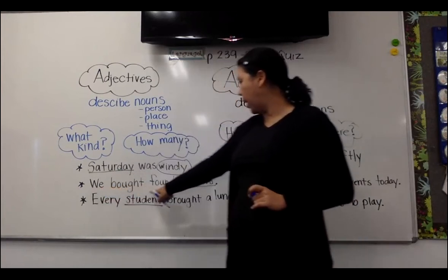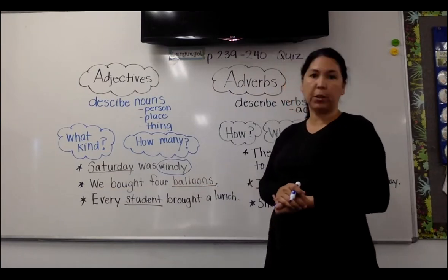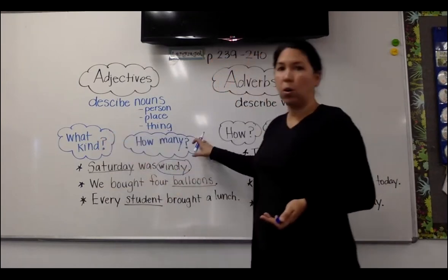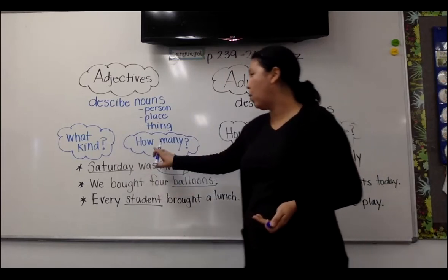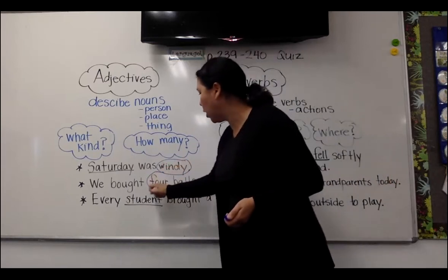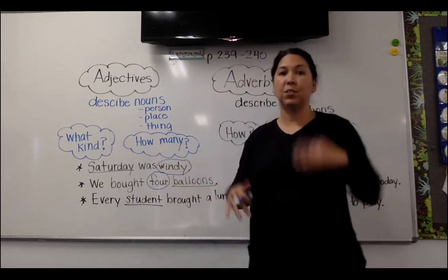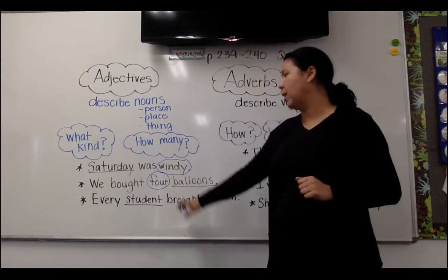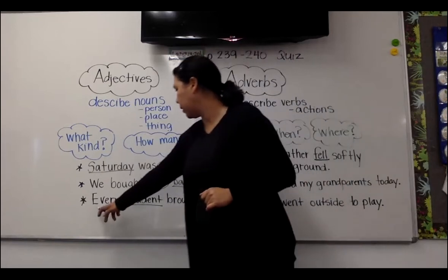Number two: We bought four balloons. Do you see a word describing balloons that either answers what kind of balloon or how many balloons? How many balloons were there? Four. Remember, whenever you see a number — seven, twelve, a hundred, many, a few — that's always what you're going to circle.